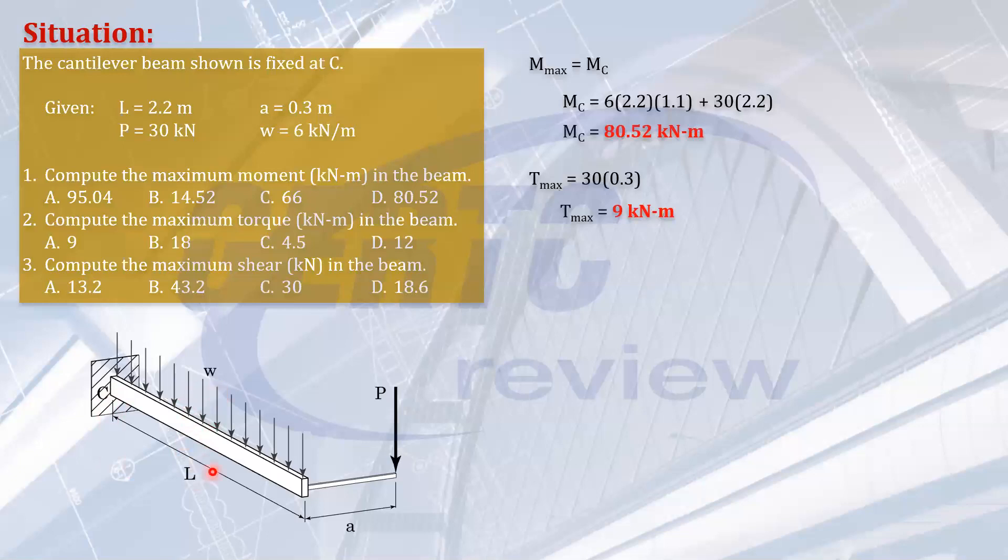That will be caused by the total load: w times L plus the force P. So that will be the shear at C. It will be caused by all the loads: 6 times 2.2, that's for the uniform load, plus your 30. So the shear force, and that is 43.2 kilonewtons.